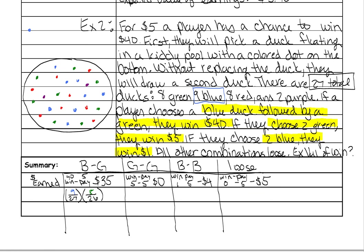Now we need to figure out the probability of going green then green. Let's put the blue duck back. The probability of getting the first green is 8 greens over a total of 27. Then the probability of drawing another green — we remove the first green duck. Now there are 7 green ducks out of a total of 26 ducks.